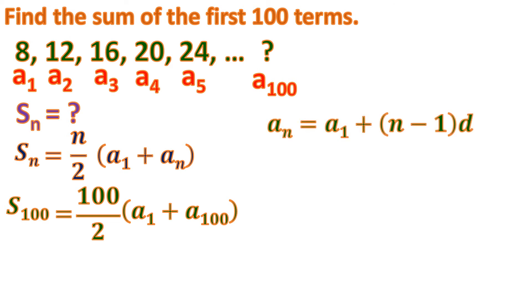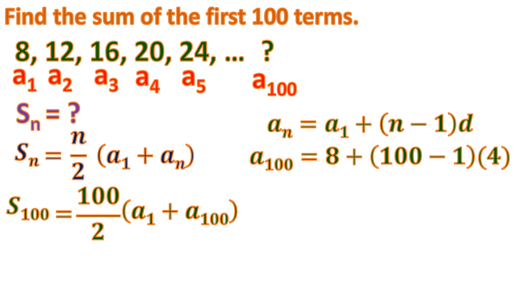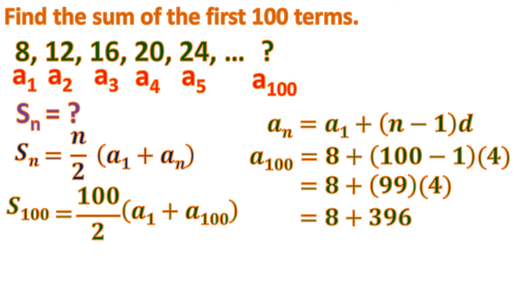So let us solve for it using the formula for the nth term of an arithmetic sequence. a sub 100 equals the first term, which is 8, plus 100 minus 1, times the common difference, which is 4. So 100 minus 1 is 99, and 99 times 4 is 396. Then 396 plus 8 gives us the last term: 404.